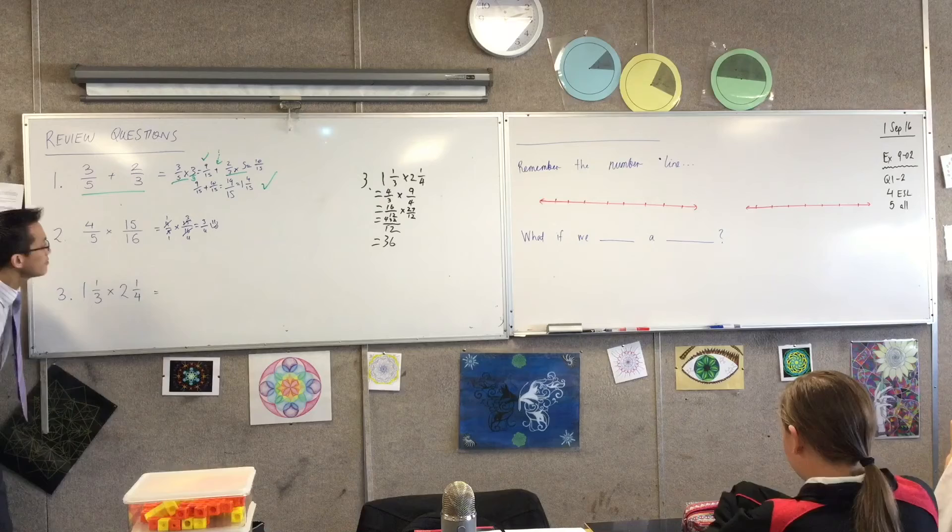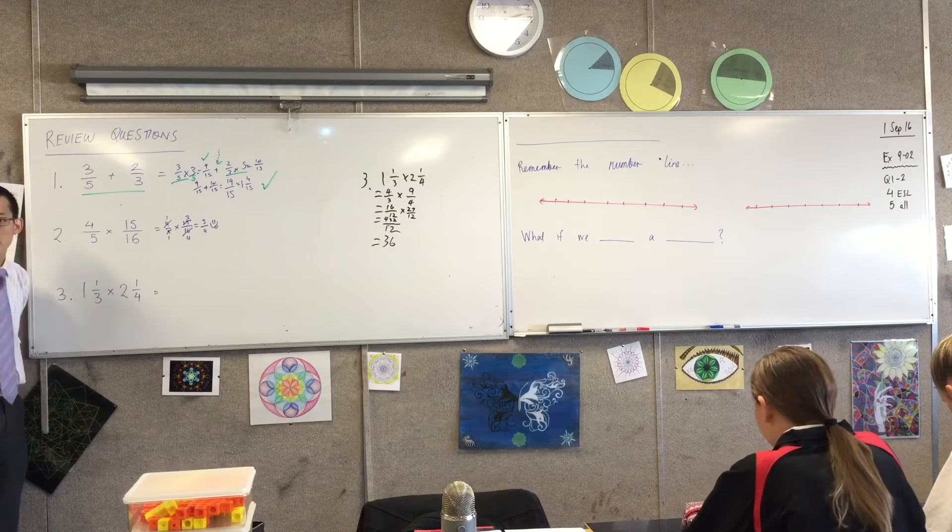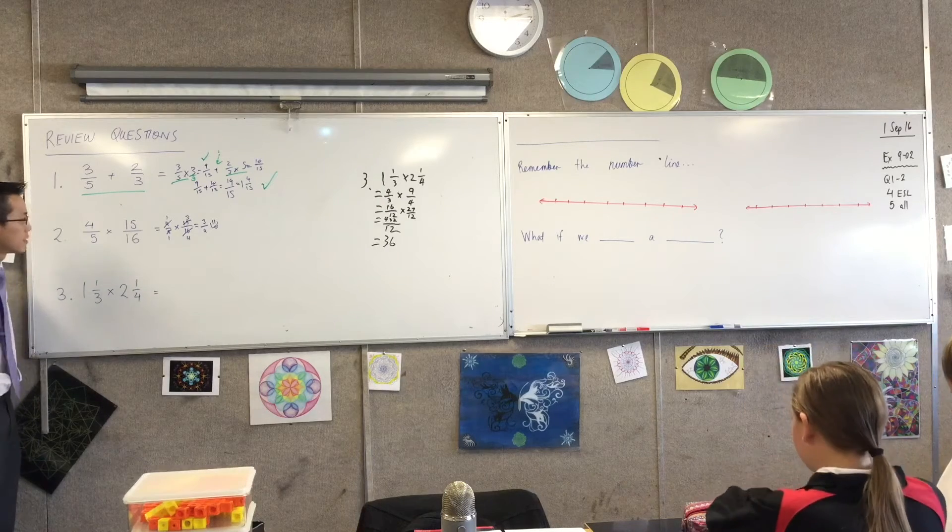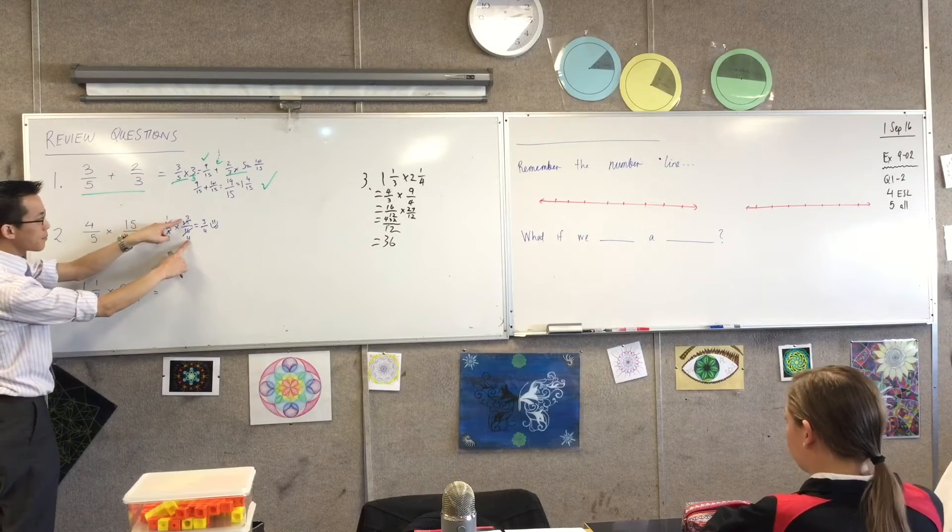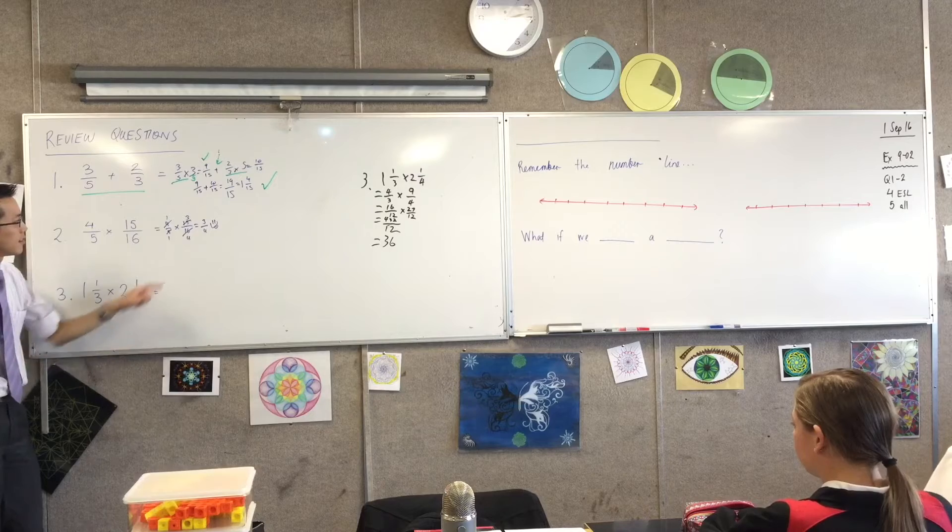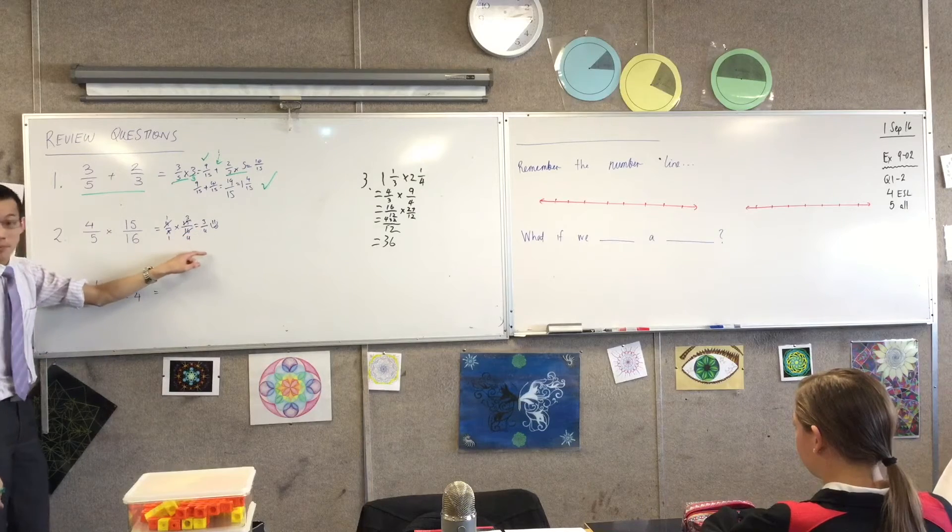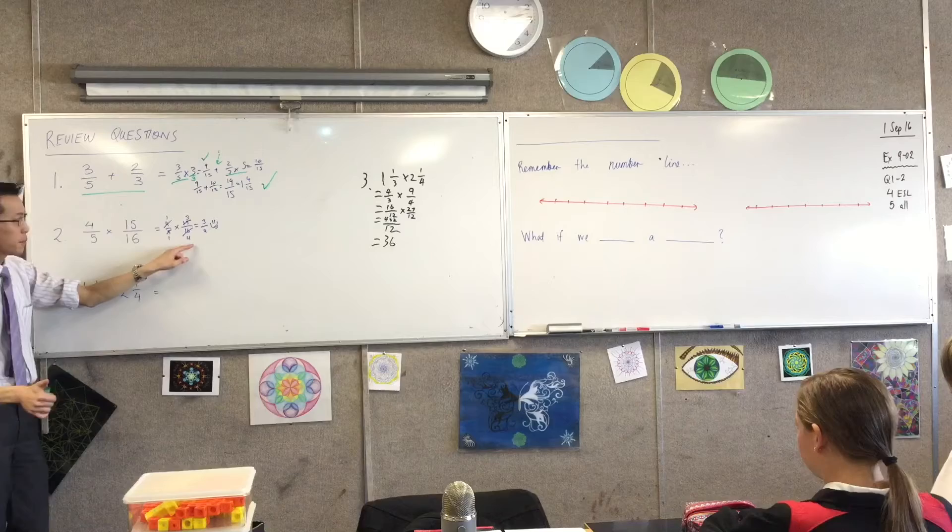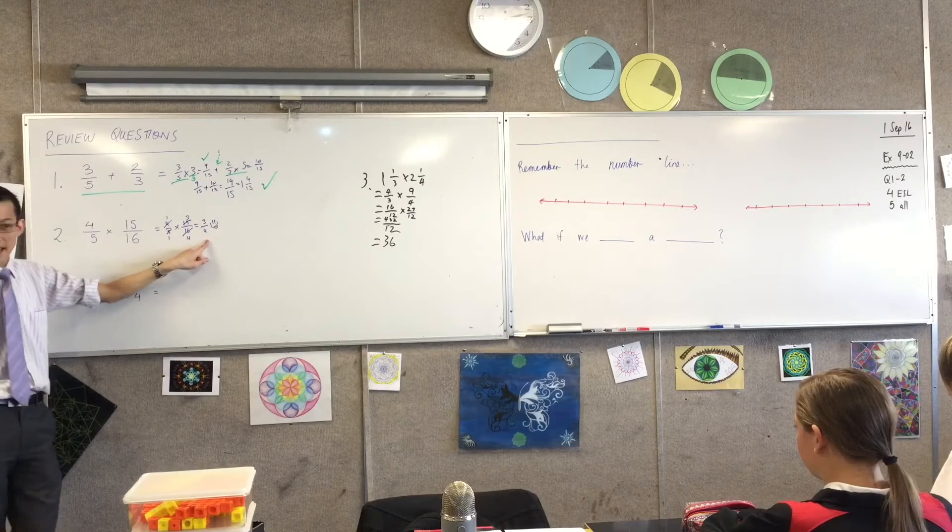Well, so he's basically divided the 16 by 4 and 15 by 5. Yep. So you get the 3 over 4 and, sorry, so you get 1 over 1 times 3 over 4, which leads you with 3. Perfect. Okay, excellent.